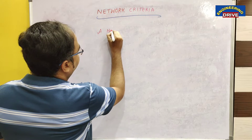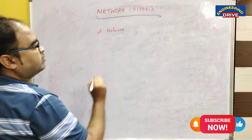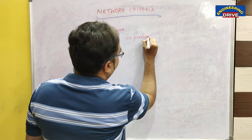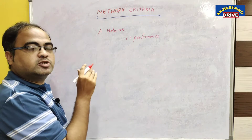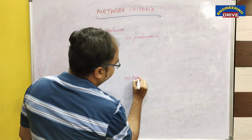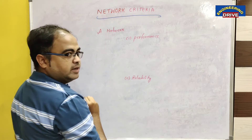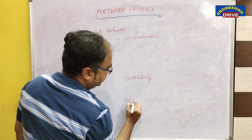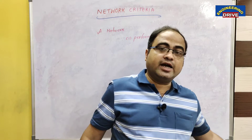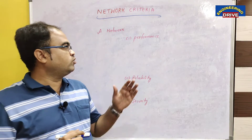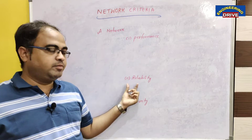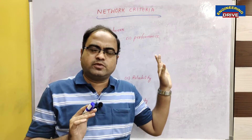A network should satisfy the minimum criteria. What is that minimum criteria? Number one is performance — we need to judge the performance of our network first. The second criteria is reliability — how much reliable our network will be. And the third criteria is security — how much secure our network will be. Based on these three criterias, the quality of a network can be determined.